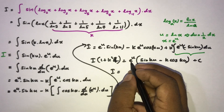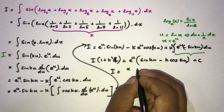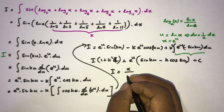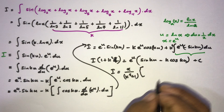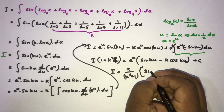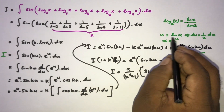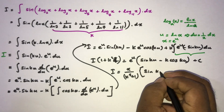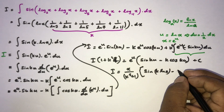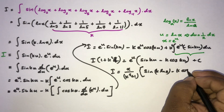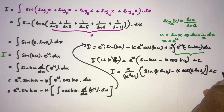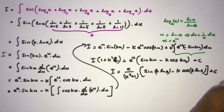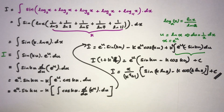Solving for I, and substituting back u equals ln(x) and x equals e to the u, the final answer is I equals x over (k squared plus 1) times (sin(k·ln(x)) minus k·cos(k·ln(x))) plus C. This is the answer for this integral. If you like this video, please subscribe to the channel — thank you for watching.